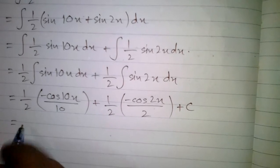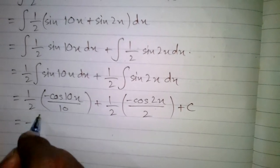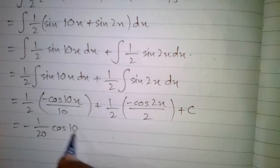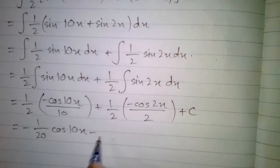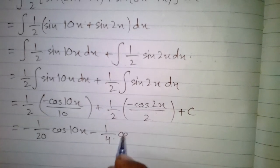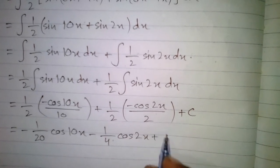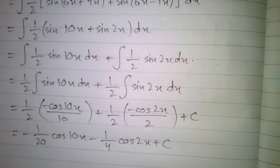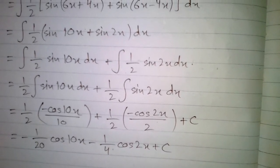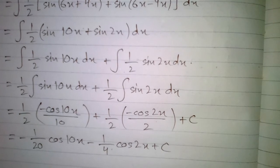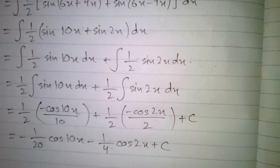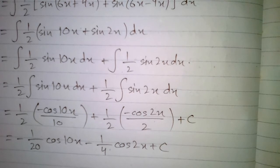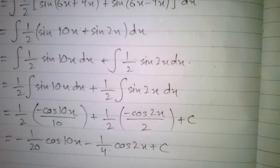After simplifying, we have minus 1 upon 20 cos 10x minus 1 upon 4 cos 2x plus c. So the integral of sin 6x cos 4x is minus 1 upon 20 cos 10x minus 1 upon 4 cos 2x plus c, where c is the constant of integration.